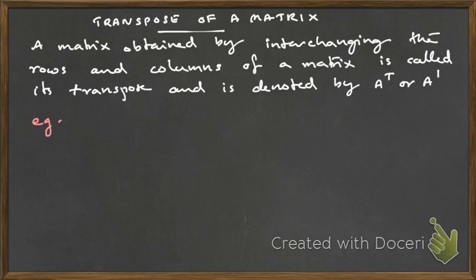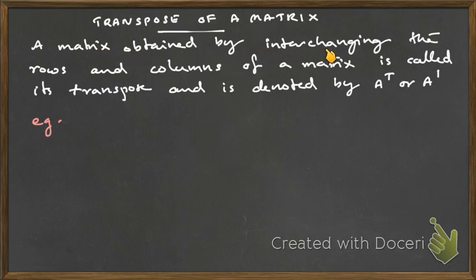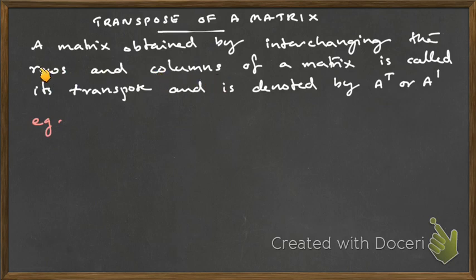To find the transpose of a matrix, you should take each row and write it as the corresponding column. Take the first row and write as the first column, take the second row and make it into the second column, take the third row and make it into the third column. That is the transpose of a matrix.